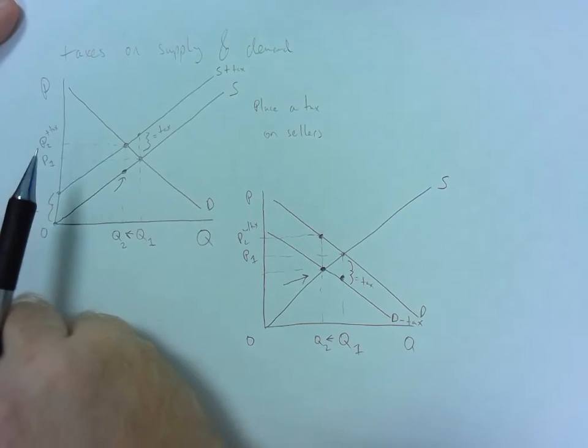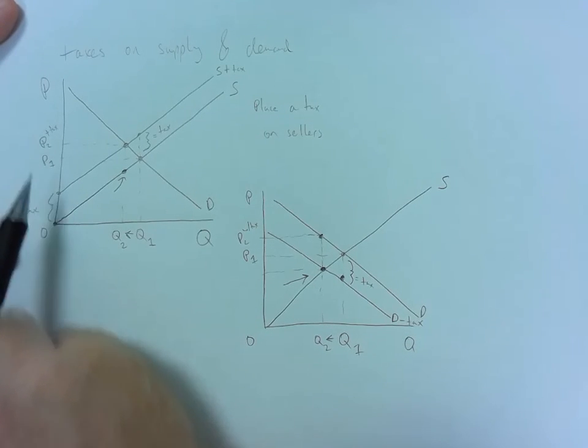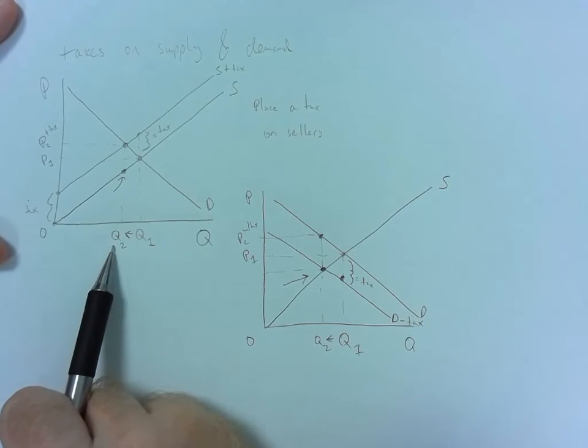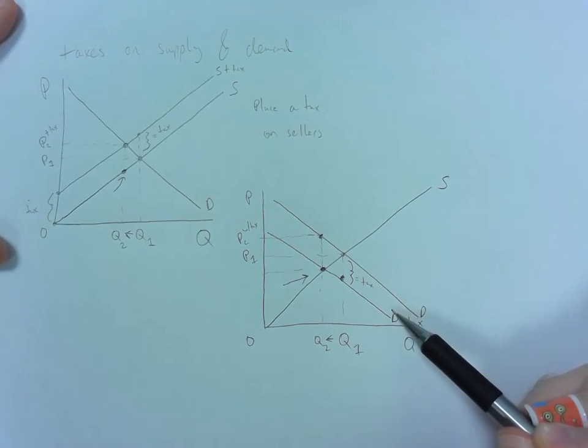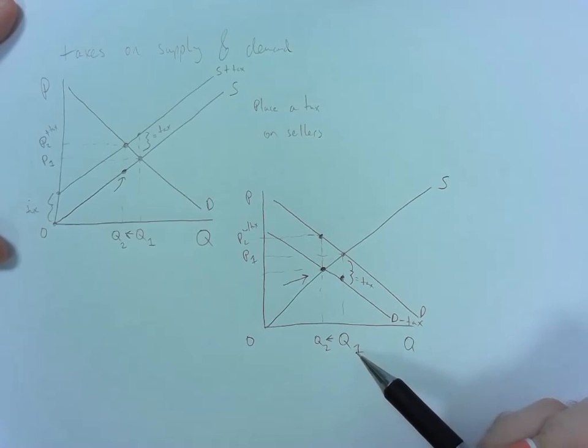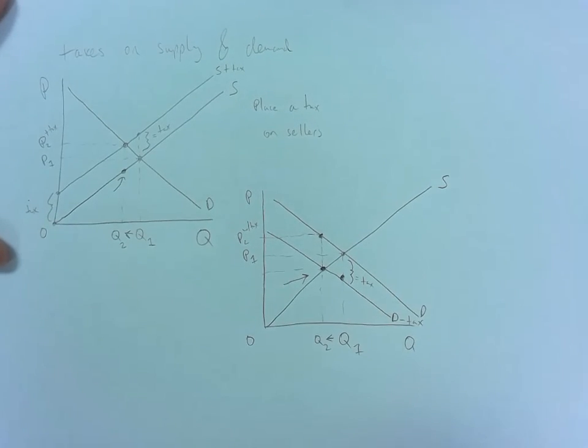So just like having the tax placed on sellers, we see the equilibrium quantity going down and the equilibrium price going up. If we put the tax on consumers, we see the same phenomenon, equilibrium quantity going down and equilibrium price going up.